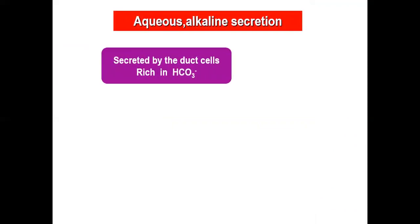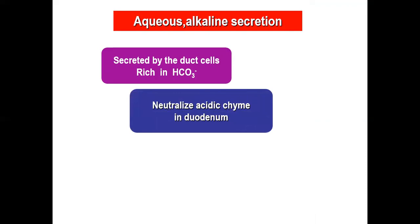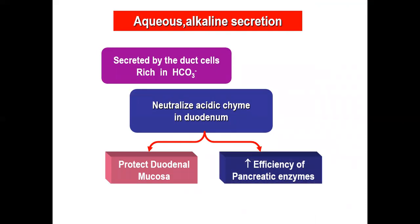The aqueous alkaline secretion is secreted by the ductal cells and is rich in HCO3. Its role is to neutralize the acidic chyme in the duodenum. Its functions are subdivided into protecting the duodenal mucosa and increasing the efficiency of the pancreatic enzymes.